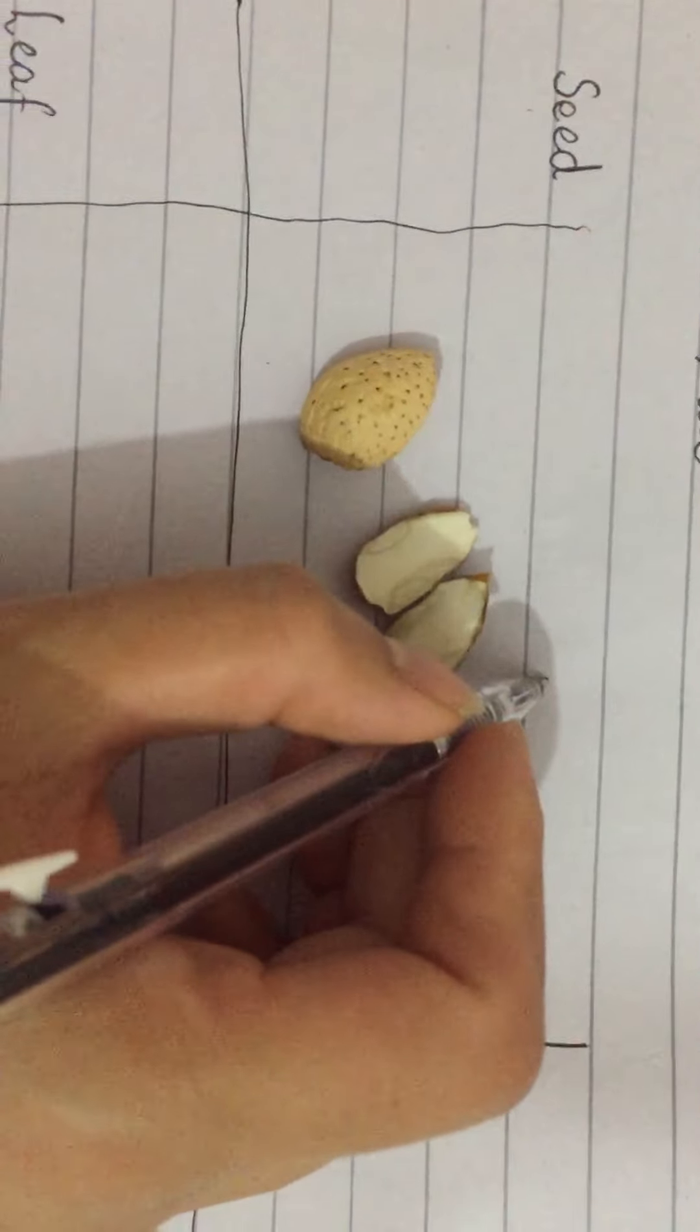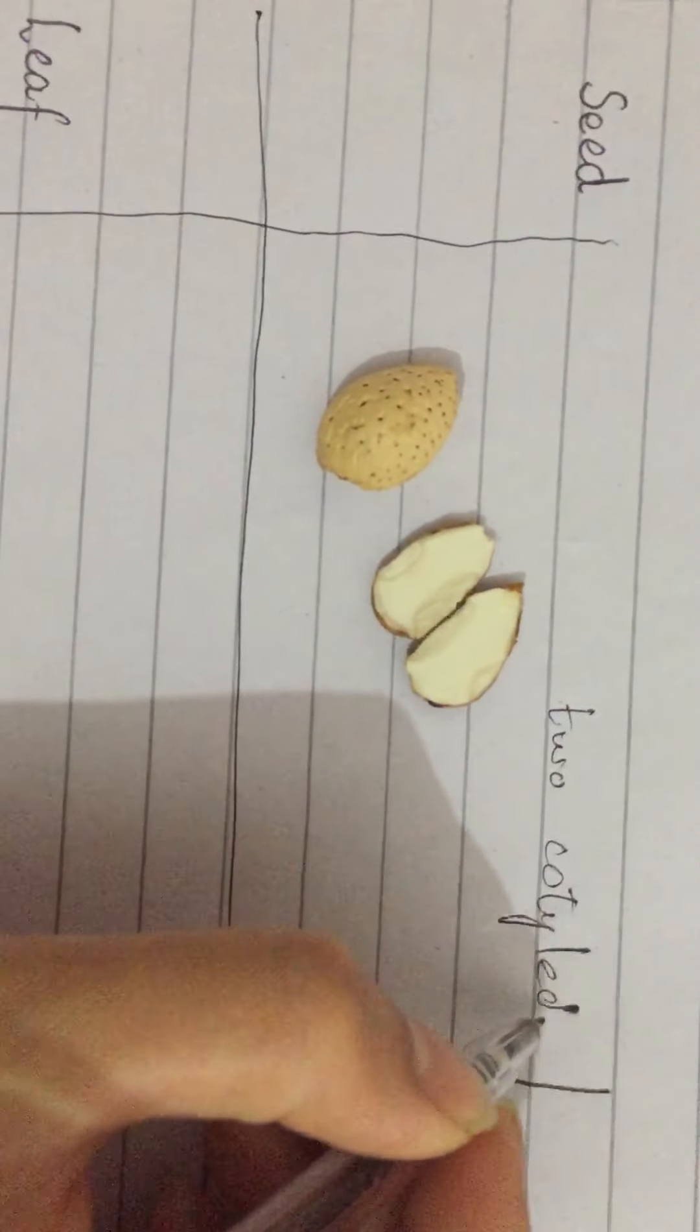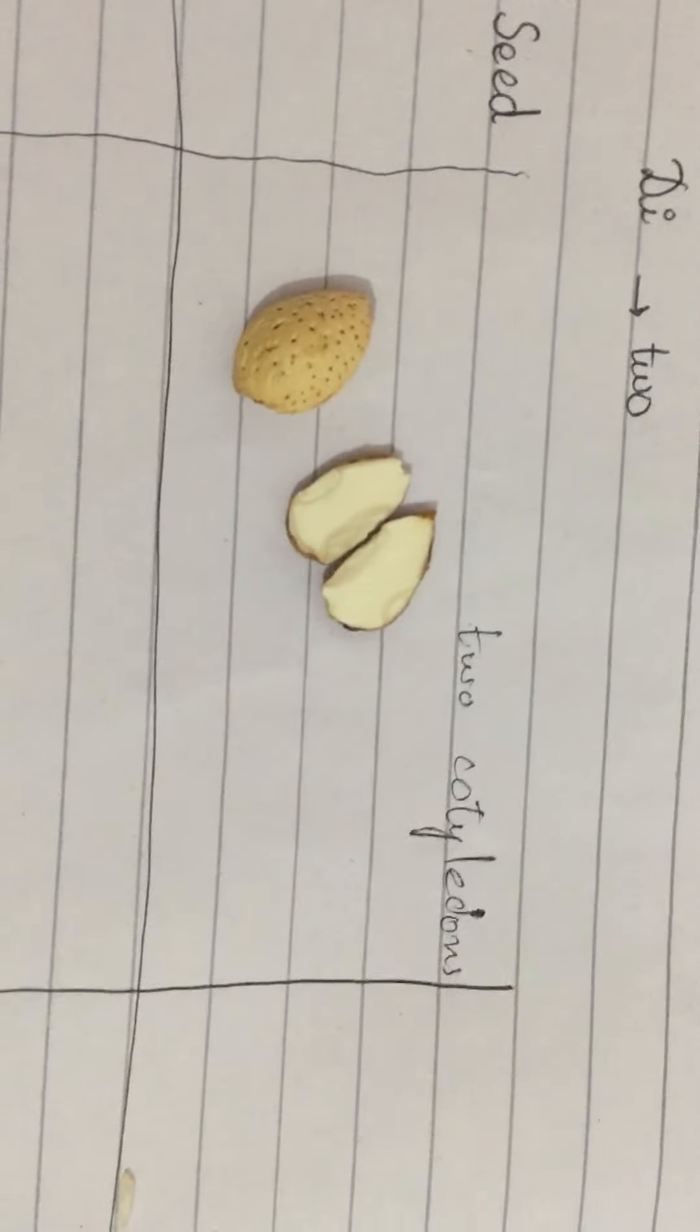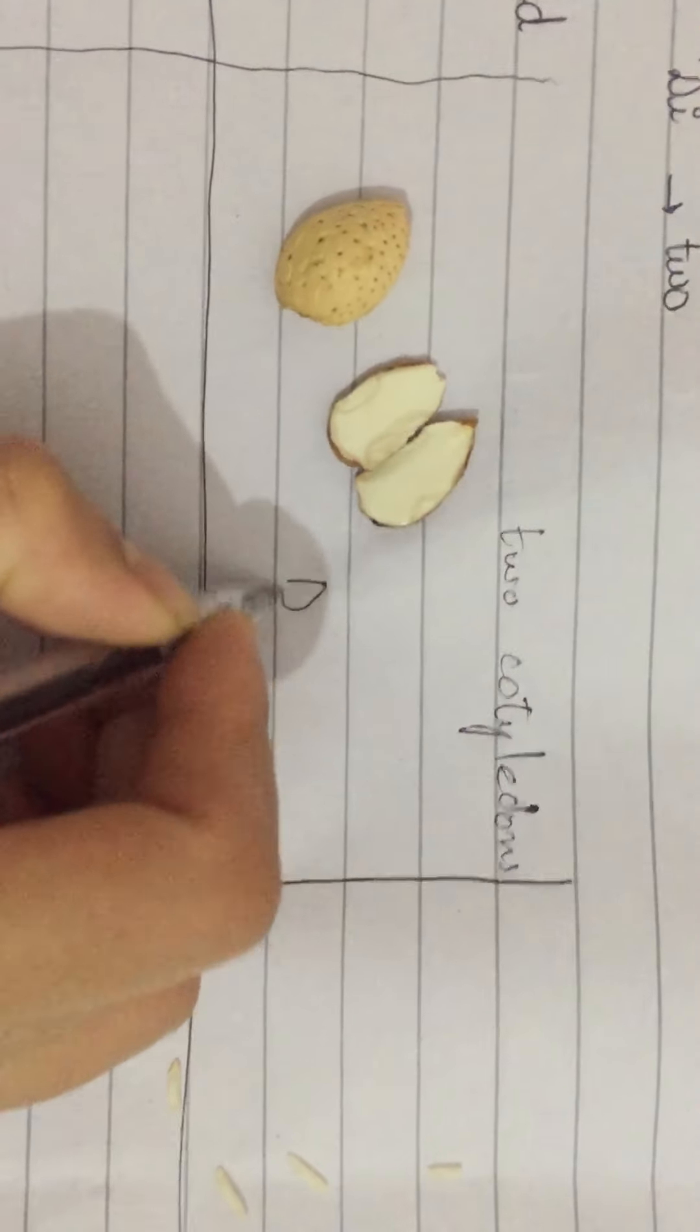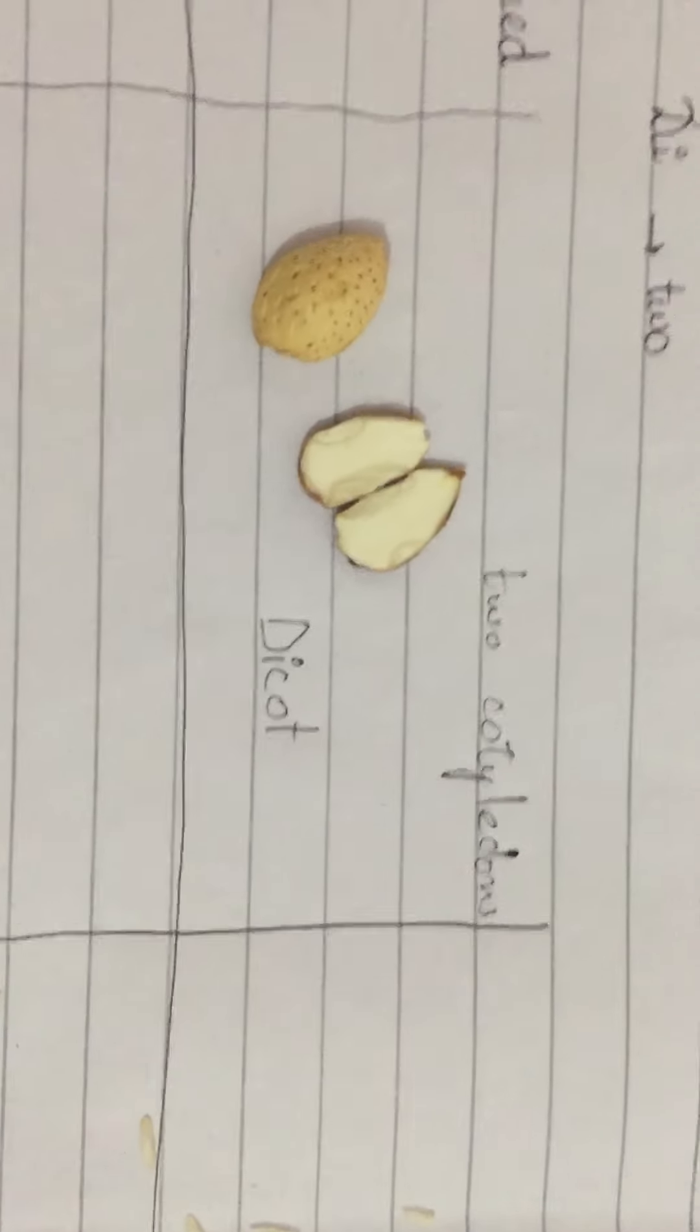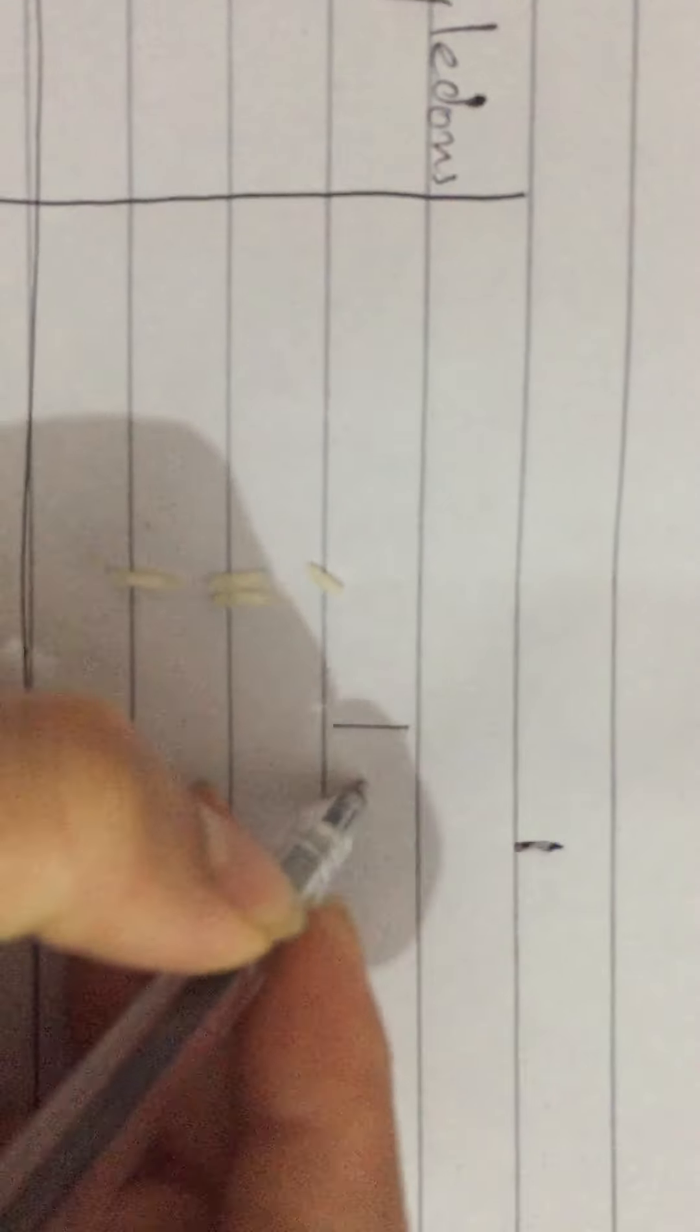So almond seed has two cotyledons, so it is a dicot. If we have these rice seeds, can you break rice into two equal pieces? No. So which has happened? One cotyledon. One cotyledon in the seed, so this is monocot. Very good.